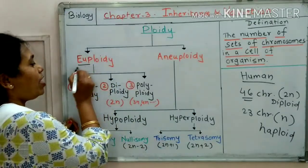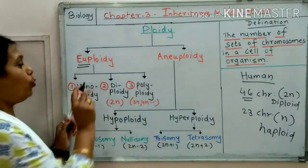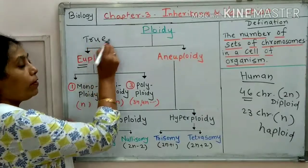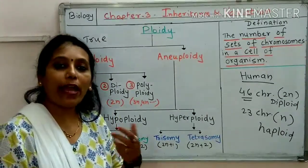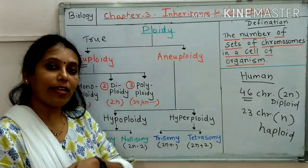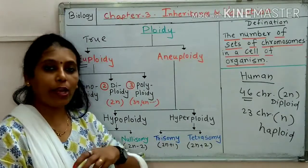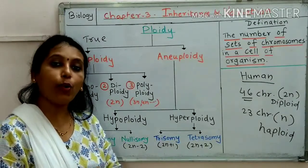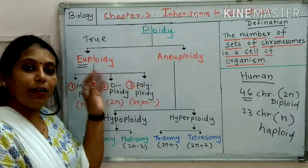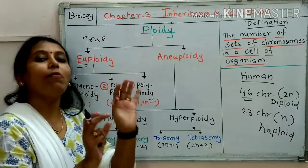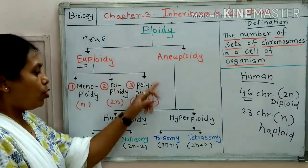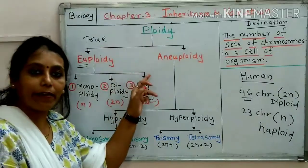The meaning of 'eu' means true — we have studied eukaryotes, where 'eu' means true and 'karyon' means nucleus, so true nucleus. Euploidy means true set, meaning a normal set of chromosomes is present. Here there are no abnormalities you will find.